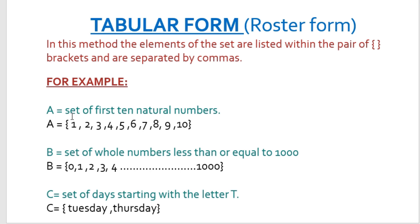For example, set A is a set of first ten natural numbers. So if we write this set in tabular form, we will actually write the first ten natural numbers: 1, 2, 3, 4, 5, 6, 7, 8, 9, 10. We list all these elements inside the curly brackets and separate them with commas.